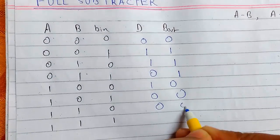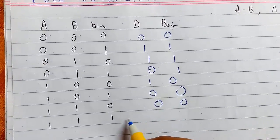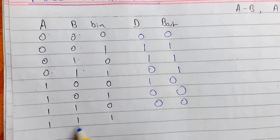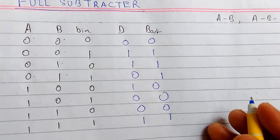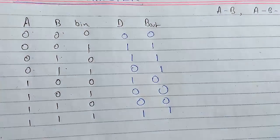So this will be 0, 0. This will be 0. And this will be 1 minus 1 is 0, and 0 minus 1 we need to borrow, and then it will be 1. So this is the final expression. This is the final truth table.